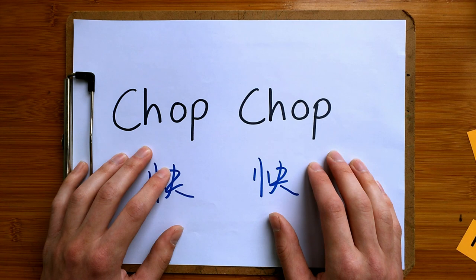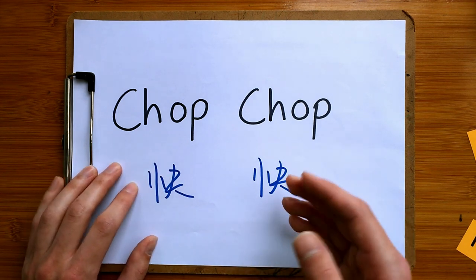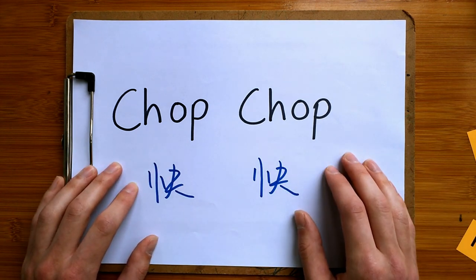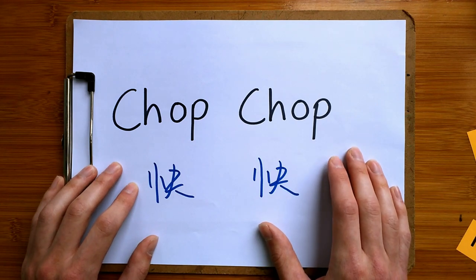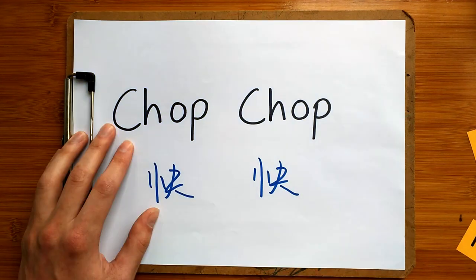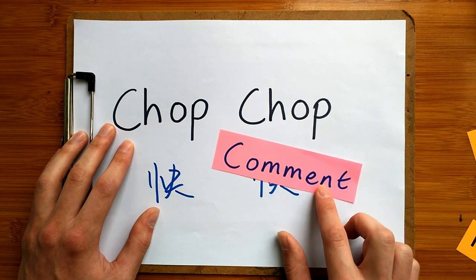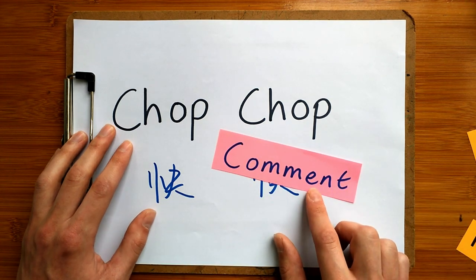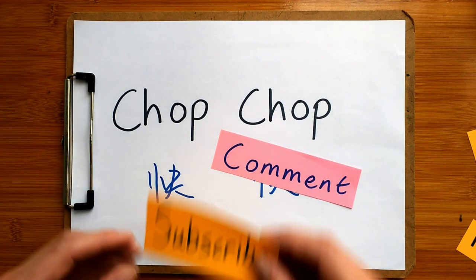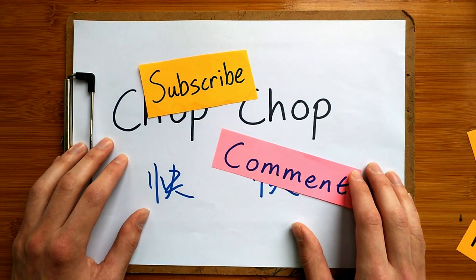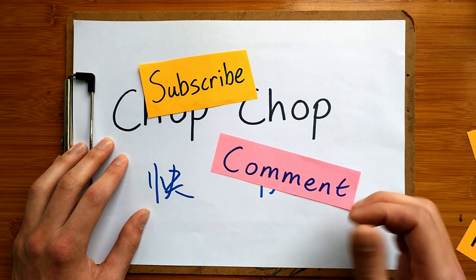There are many words in the English language that come from different languages. These are just a few examples of how the Chinese language has influenced English. If you know any other languages or any other words that have influenced or changed English, please leave a comment and let me know — I'll be really interested to find out. If you haven't already, please subscribe to the channel. Thanks for watching the video, and I'll see you next time.